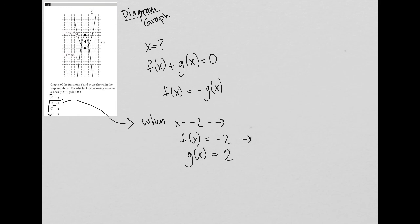when x equals negative 2, f of negative 2 equals negative 2, and g of negative 2 equals positive 2, right? And therefore, when I add them together, I'm going to get a 0.